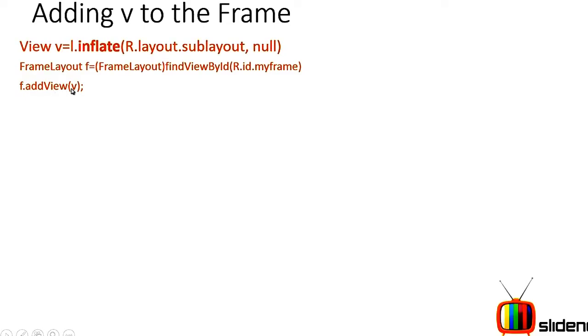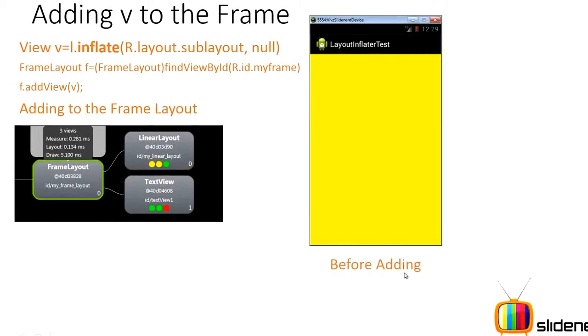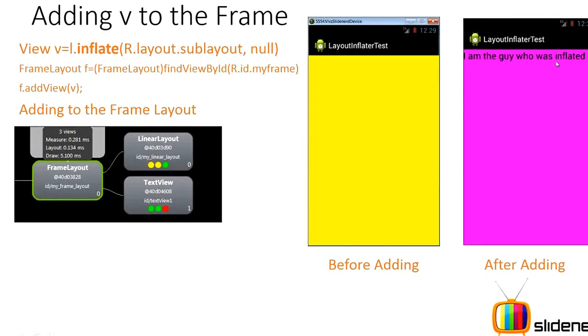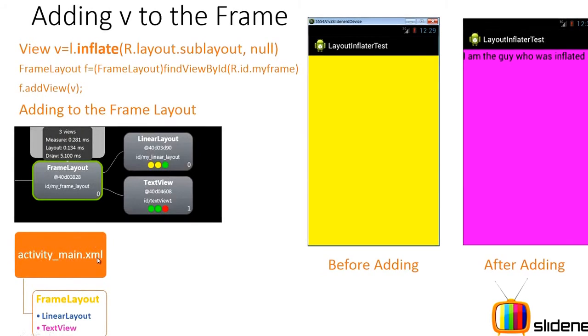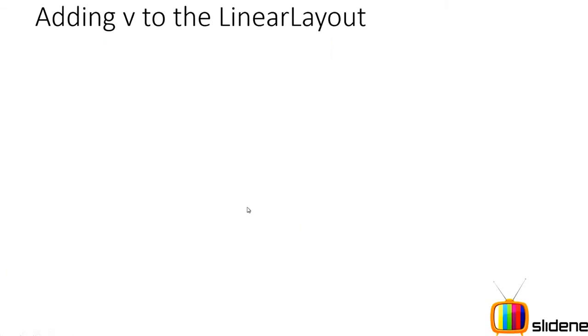To add it to the FrameLayout: first get the FrameLayout from XML by calling findViewById(R.id.my_frame), then call f.addView(V). What happens is: you now have your FrameLayout, with the LinearLayout and the TextView as siblings — both children of the FrameLayout. Before adding, you saw the blank screen. After adding, since the LinearLayout is empty it doesn't show up, and the TextView takes up the full space on the screen.